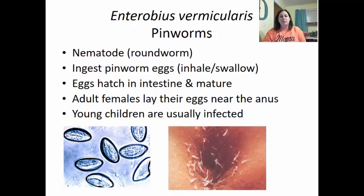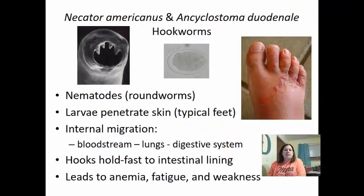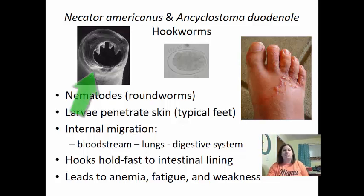Enterobius vermicularis are pinworms — nematodes or roundworms. Pinworm eggs are ingested by inhaling or swallowing them, hatch in the intestines, and mature. Adult females lay eggs near the anus, causing an itchy anus especially in young children who are usually infected. Hookworms (also nematodes) have larvae that penetrate the skin, typically the feet, and undergo internal migration from the bloodstream to the lungs to the digestive system. Hooks help them hold fast into the intestinal lining, and this can lead to anemia, fatigue, and weakness.